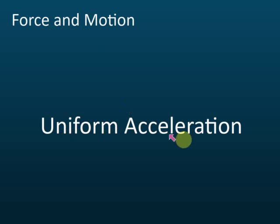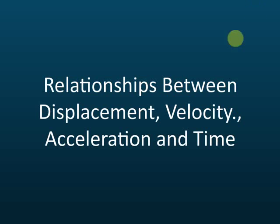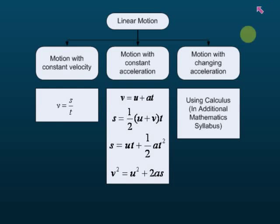Let's proceed with force and motion: uniform accelerations — the relationship between displacement, velocity, acceleration, and time. There are three types of motions you must be very clear about, because a lot of students get confused and don't know which formula to use. The first type is motion with constant velocity.